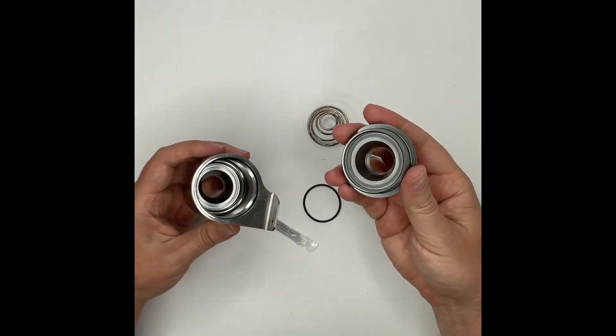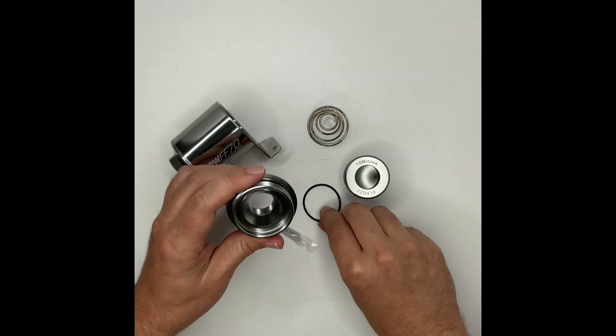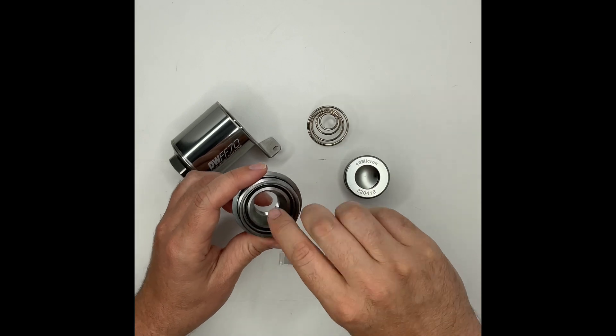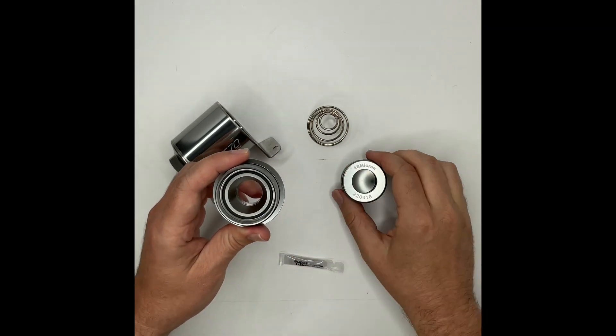For the purpose of this video we're going to assume the right side of our filter housing is the outlet side. So then we will take our tube of super lube, dab a little on our o-ring and install it into the groove.